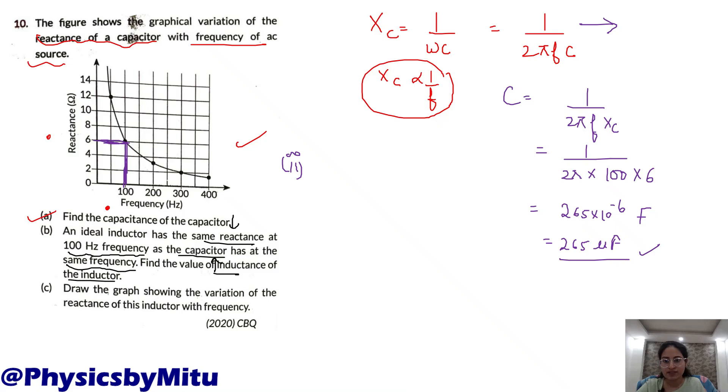The inductor and capacitor have the same reactance. That means XL is equal to Xc. Omega L is equal to 1 by omega c and you have to find L. So, L is equal to 1 by omega square c. Omega 2 pi f square into c. You can write 4 pi square f square c.